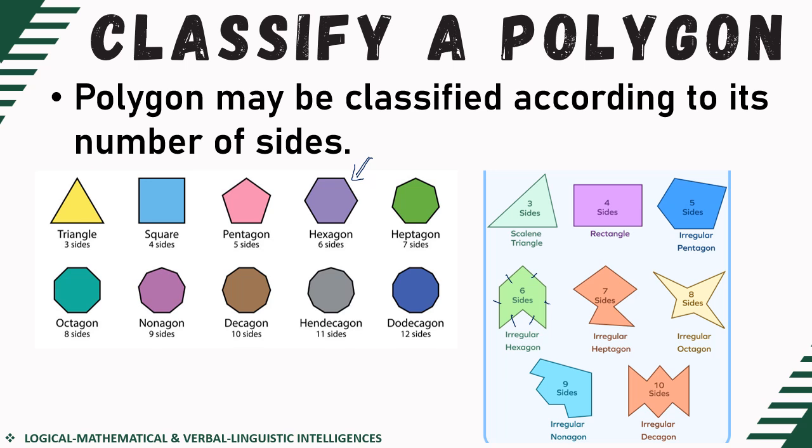Let's say we have this nonagon. As you can see, this is a convex regular nonagon. But I'd like you to be aware that apart from this common example, we can also have this particular figure. Let's count: 1, 2, 3, 4, 5, 6, 7, 8, 9. We do have nine sides, so we can definitely call this a nonagon as well. It's just that it is concave and irregular, but still classified as a nonagon.